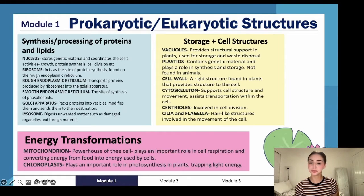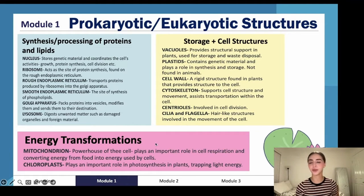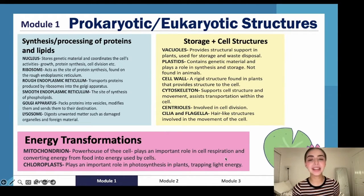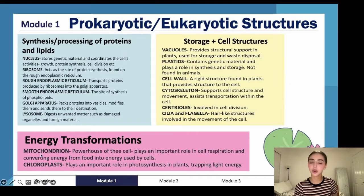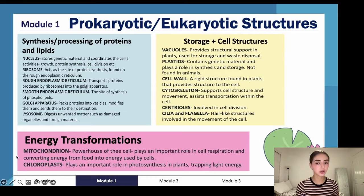Mitochondria are the powerhouse of the cell — hopefully you've heard that phrase before. They are important in cell respiration and energy production. Chloroplasts are essentially the mitochondria of plants; they are important in photosynthesis and converting light into actual energy that can be used by the plant.